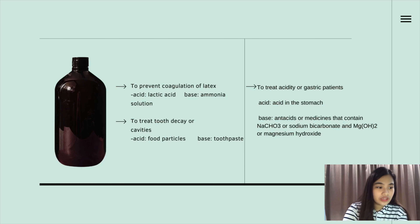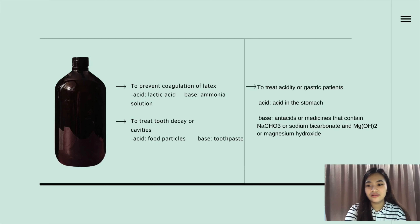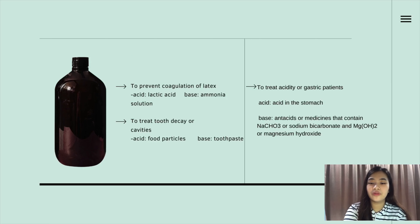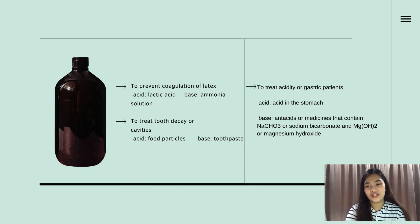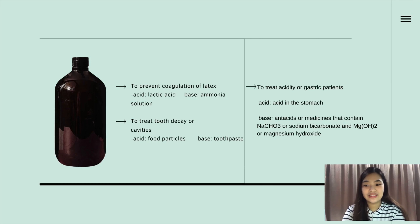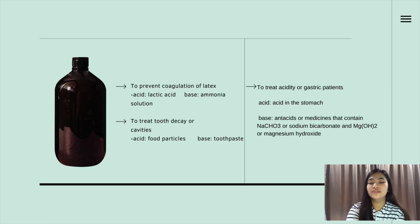Another example is to treat tooth decay or cavities. Most food particles are acidic in nature. Such foods produce acid in our mouth which reacts with enamel or calcium phosphate and leads to cavities. Using toothpaste while brushing helps to neutralize the acid since toothpaste is a base. And connected to our experiment, to treat acidity or gastric problems: acidity arises due to an increase of acid in the stomach. Antacids are medicines containing bases such as sodium bicarbonate and magnesium hydroxide that neutralize the excess acid in the stomach.